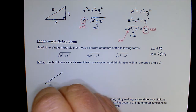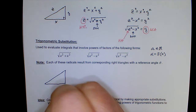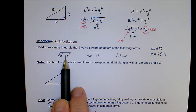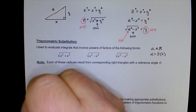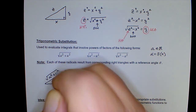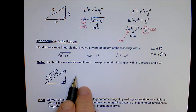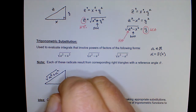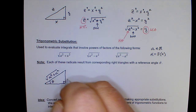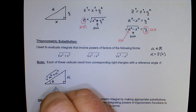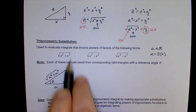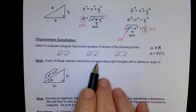For the first triangle: since this is a sum of two squares under the radical, we're going to make the radical part the hypotenuse, and then u and a would be the legs. I'm going to suggest labeling u as opposite to the reference angle theta, and a as adjacent to theta. That's the corresponding triangle when the radical is a sum of two squares.